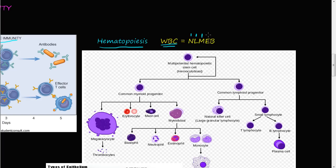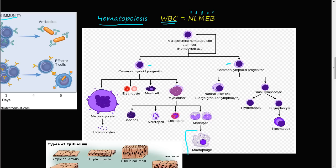Let's look at where these cells come from. You have a stem cell, and growth factors stimulate it to become either the common myeloid progenitor or the common lymphoid progenitor. The myeloid progenitor gives rise to megakaryocytes, thrombocytes, erythrocytes, mast cells, and myoblasts. Myoblasts differentiate into basophils, neutrophils, eosinophils, and monocytes. Monocytes, once they diapedese out of the blood, become macrophages. Macrophages and neutrophils are mainly the phagocyte cells of the innate immunity. The natural killer cell from the common lymphoid progenitor is also a player in innate immunity.